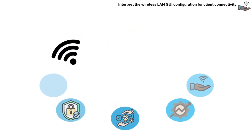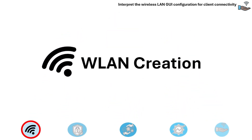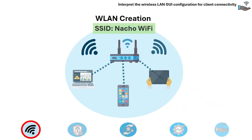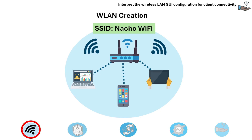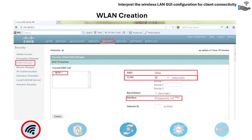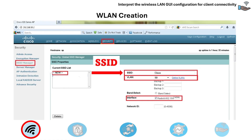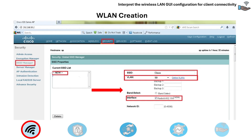Let's get started with wireless LAN creation. A wireless LAN is the process of defining a wireless network that wireless clients can connect to. The key elements you'll see in the GUI are SSID, which is the broadcast name of the wireless network; VLAN ID, which maps wireless LAN traffic to a wired VLAN; and interface using Wi-Fi protocols and frequencies like 2.4 or 5 GHz.